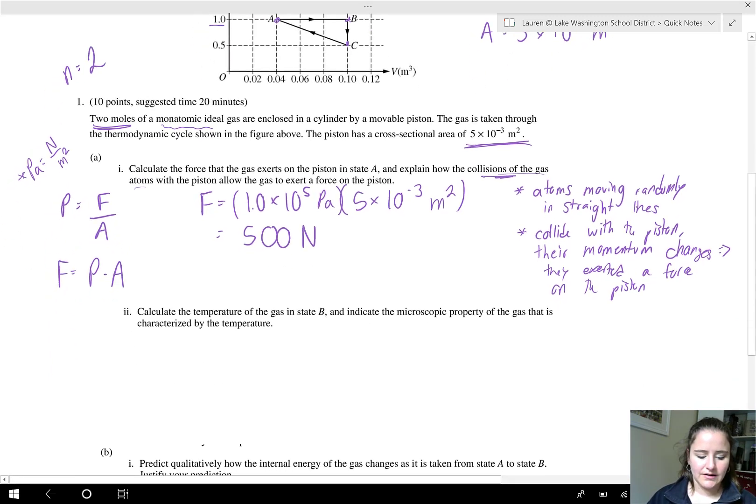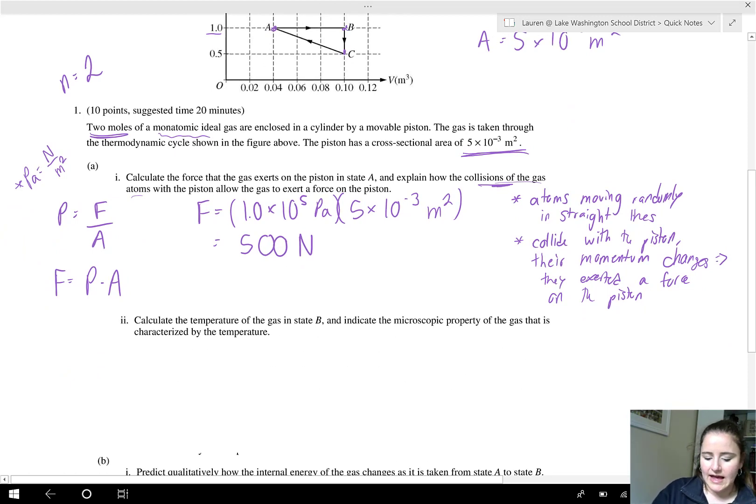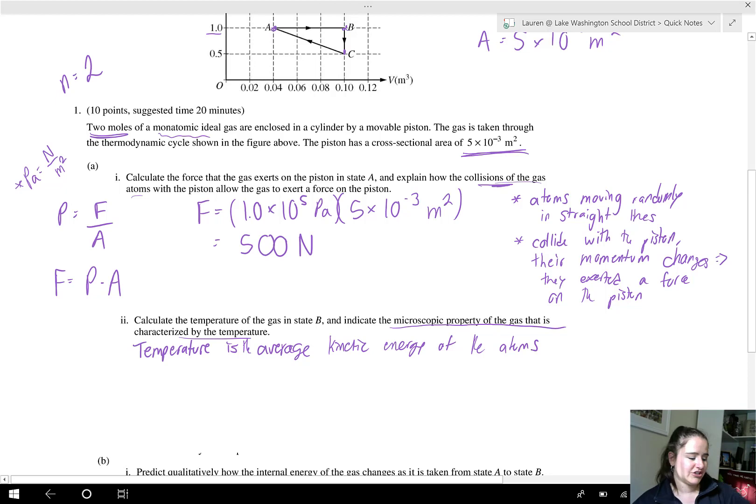Number two. Calculate the temperature of the gas in state B and indicate the microscopic property of the gas that is characterized by the temperature. Temperature is average kinetic energy. Temperature is a measure of the average kinetic energy of the atoms. Average kinetic energy is a measure of how much they're moving. If they're moving more, they got more energy. They're at a higher temperature. So now we're going to calculate that temperature.